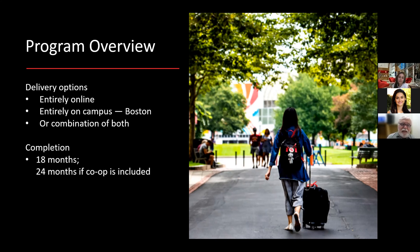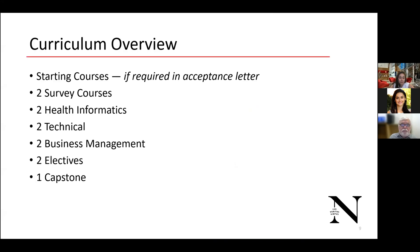Everything available on campus is now also accessible in an online format. Students who go full-time can complete the program in 18 months; if you choose to do a co-op, add an additional six months since co-ops are six months long. This is a high-level overview of the curriculum. Some of you may have received a provisional acceptance indicating a starting course you must take.